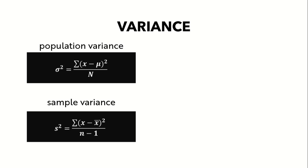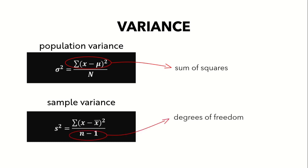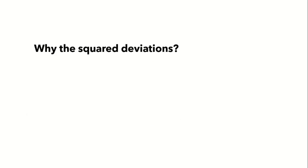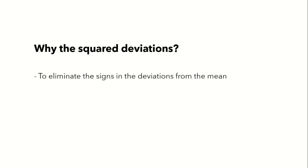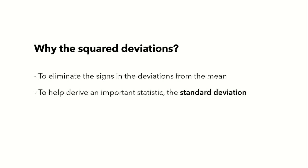The concept of variance involves two important modifications. First is the numerator — the sum of squared deviations from the mean, called the sum of squares. Second, particularly for sample variance, is the divisor n − 1, called the degrees of freedom. When someone asks why we square the deviations, the most common answer is that it eliminates the signs of the deviations, but we already solved that problem by taking absolute values. Another key reason is that squaring helps us derive an important statistic: the standard deviation.